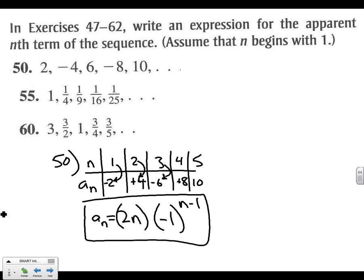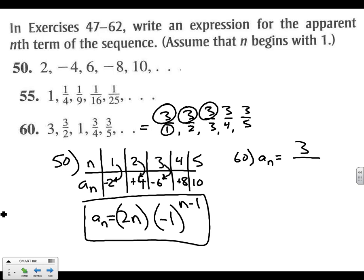Let's take a look at 60. If we rewrote this, we could say this is 3 over 1. Then 3 over 2. 1 is the same as 3 over 3. 3 over 4. 3 over 5. And then it keeps going. So our formula here for 60, we could say a sub n equals, if we look in the numerator, it's always 3. 3 is staying the same. So we'll put 3 in the numerator. The denominator for the first term is 1. For the second term is 2. So that's just going to be n. Whatever number in the list we are, put that number in. So that's our answer for 60.